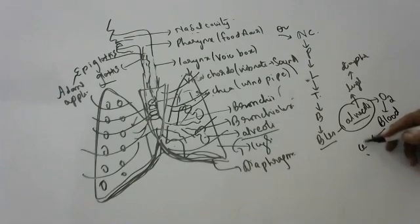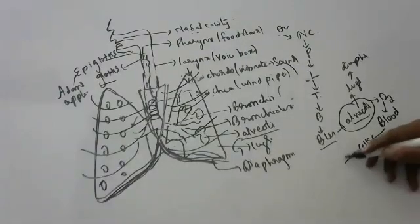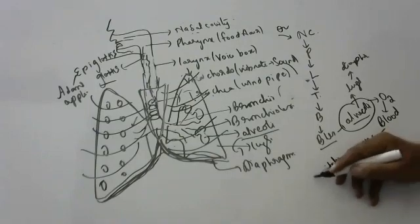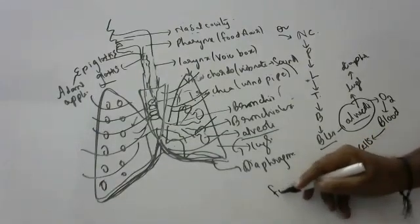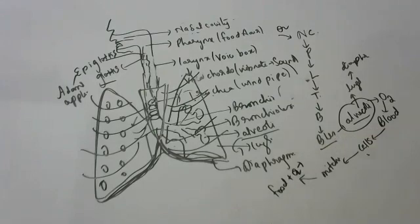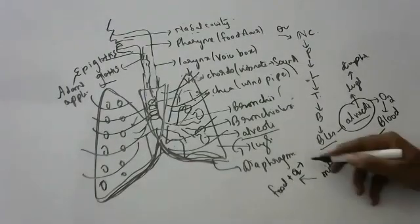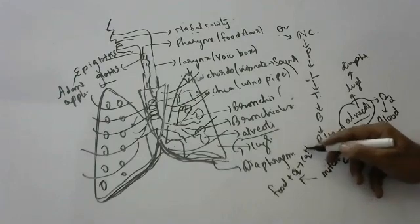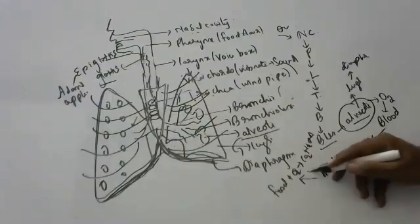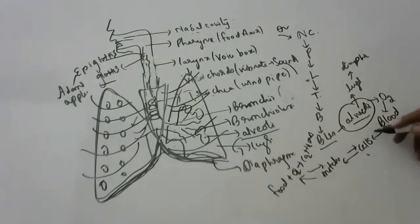The blood takes oxygen to the cells. In the cells, oxygen goes to the mitochondria. In the mitochondria, glucose gets oxidized to liberate carbon dioxide, water, and energy. The carbon dioxide then enters back from mitochondria into the cells and then to the blood.